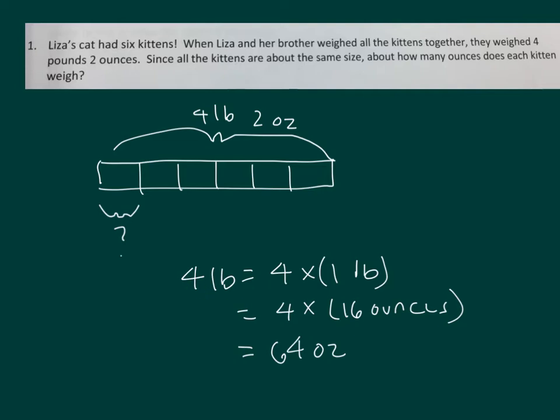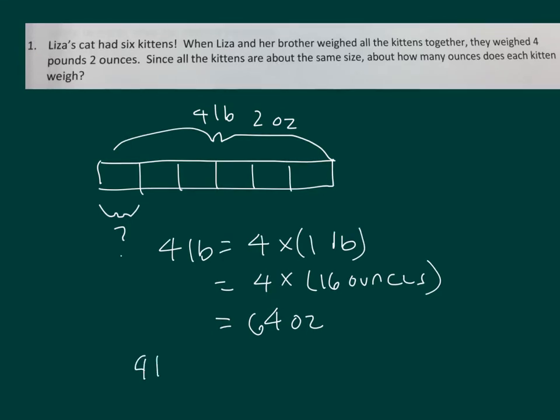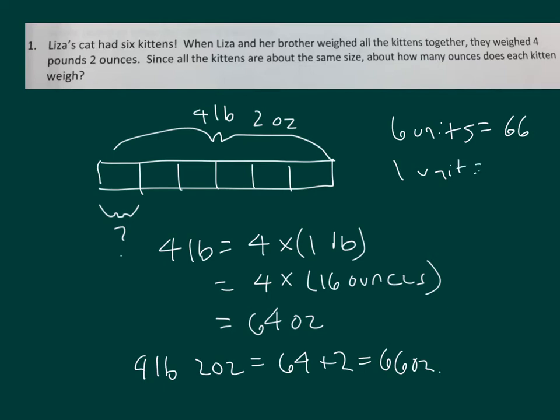If four pounds is 64 ounces, then four pounds, two ounces is 66 ounces. Now what we have here is we have six units equaling 66 ounces. So one unit is equal to, divide both sides by six, 11 ounces. So each kitten weighs 11 ounces.